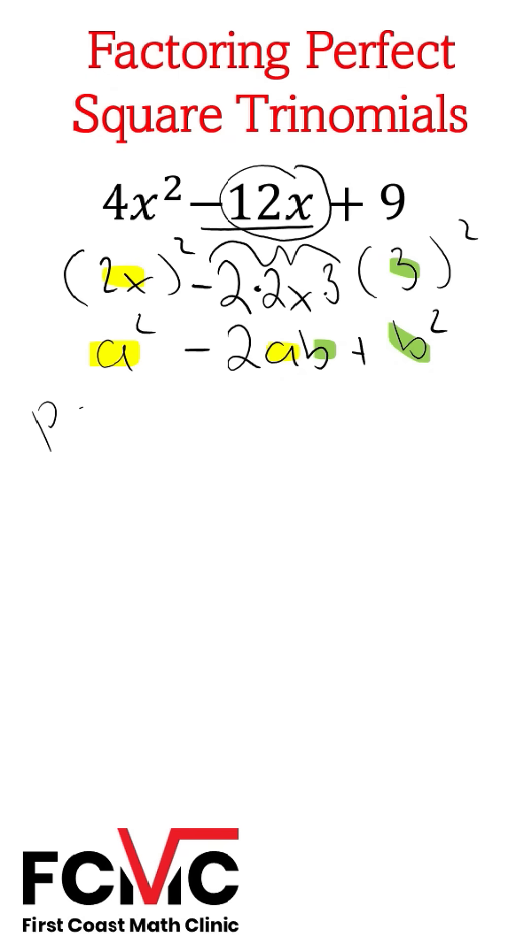So yes, this is a perfect square trinomial. And we know that a squared minus 2ab plus b squared, well that's equal to a minus b squared.